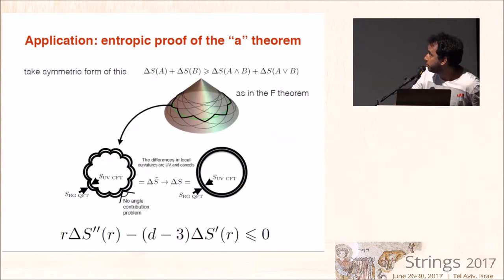So at this point, we can repeat this idea that was used in the F theorem to apply the strong subadditivity inequality in a symmetric form, which uses boosted spheres on the light cone. And the problem of the wiggly sphere that appeared then are solved because we can substitute the difference of wiggly spheres by difference of smooth spheres.